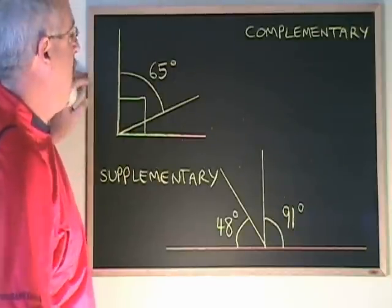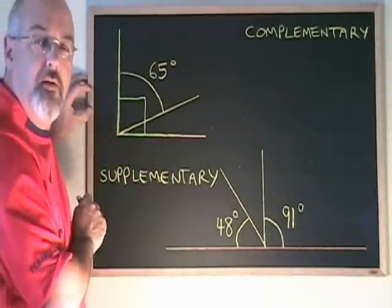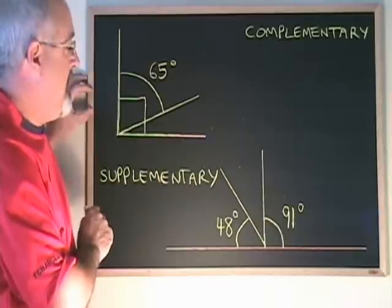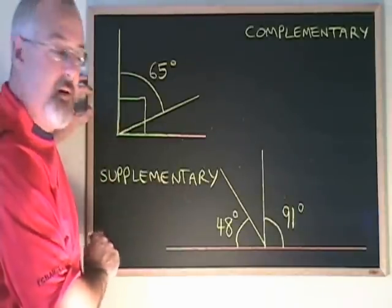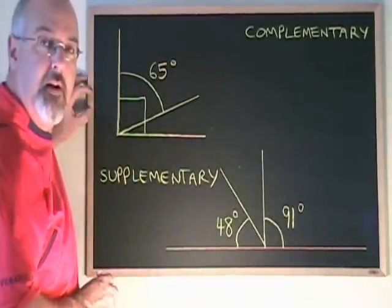Complementary angles add up to a 90 degree angle and supplementary angles add up to a straight angle, a 180 degree angle.